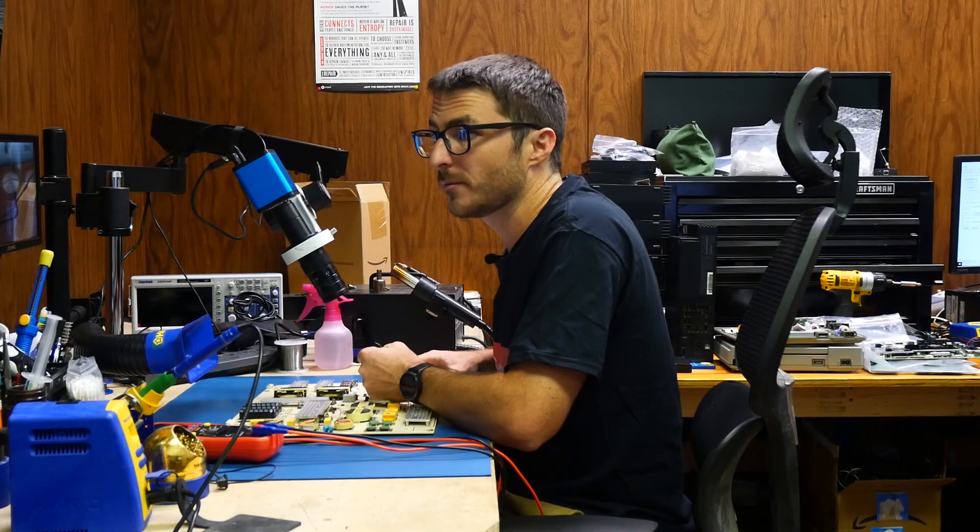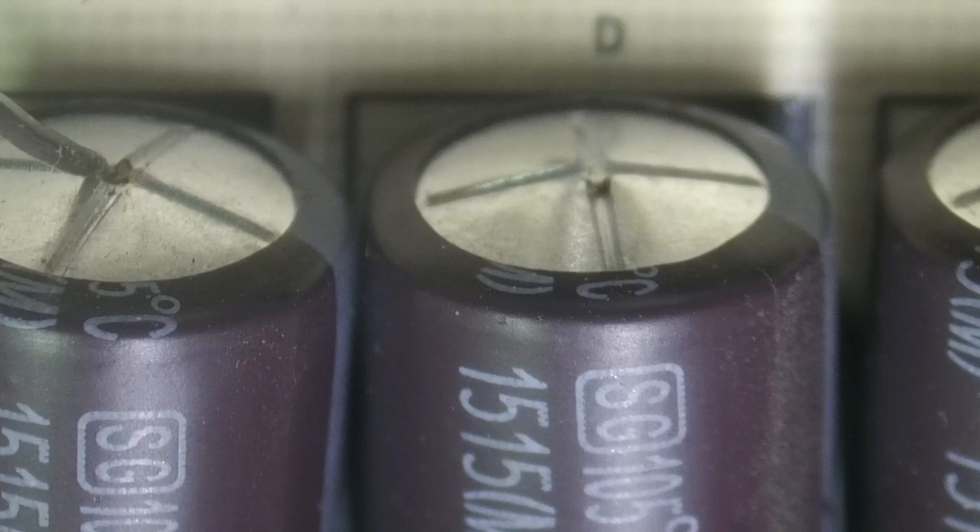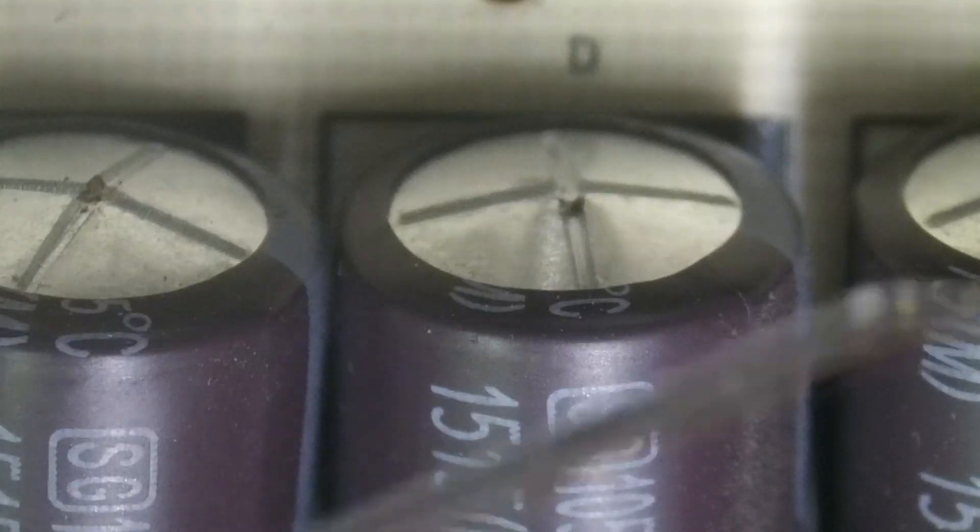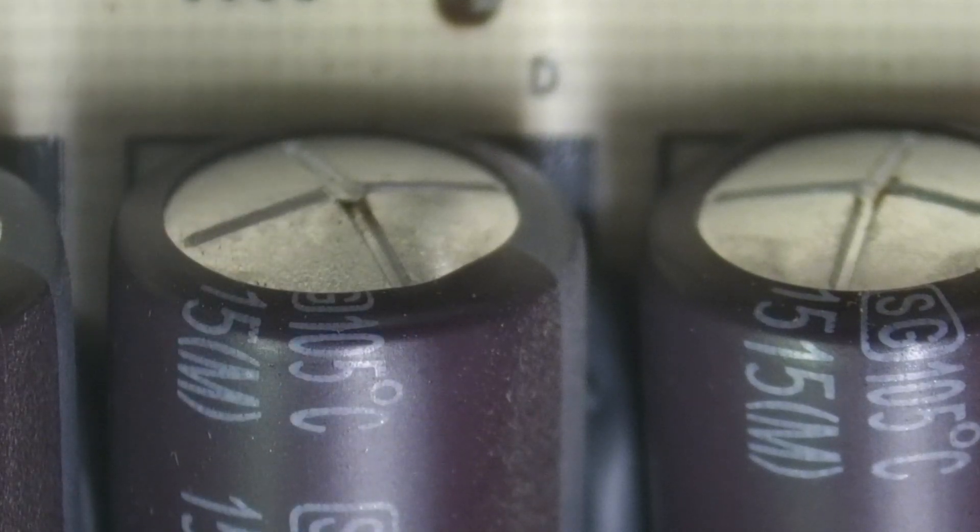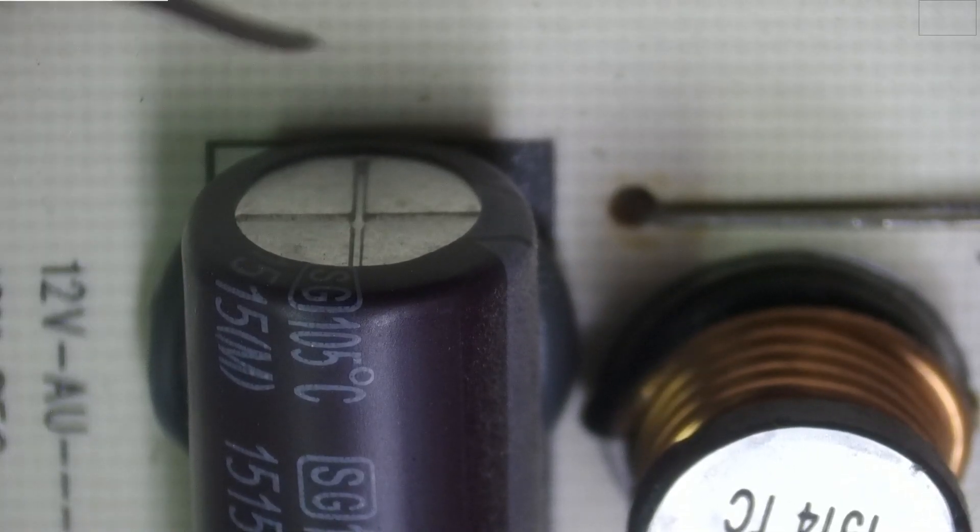If we zoom in on them a little bit more, we can even tell that there's a little bit of brown leaking electrolytic fluid at the top, and that's an indicator that the capacitors are bad. Now let's take a look at these three down here—those are fine.